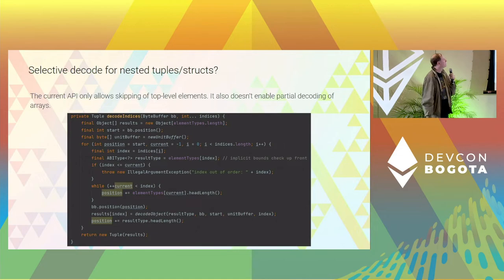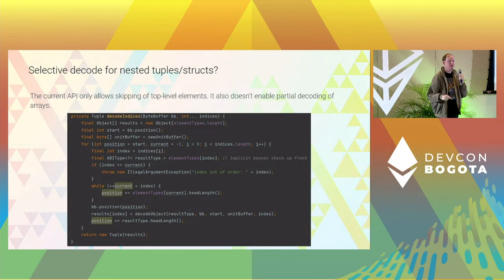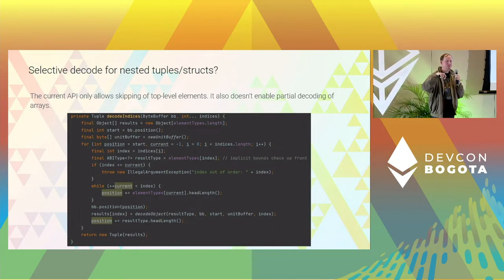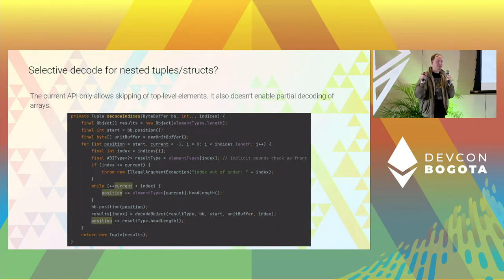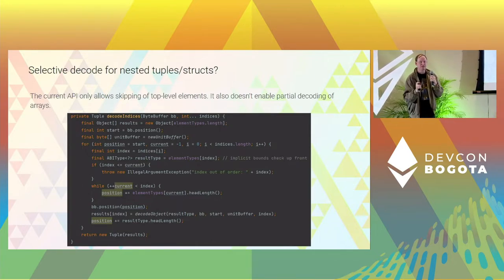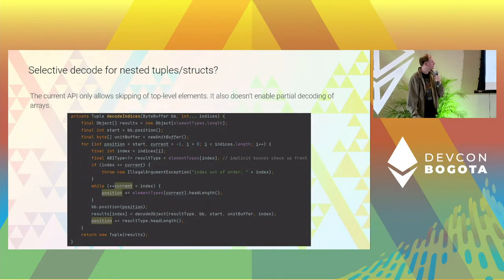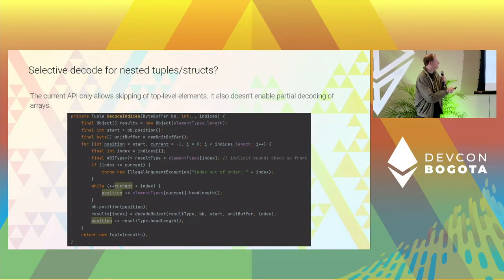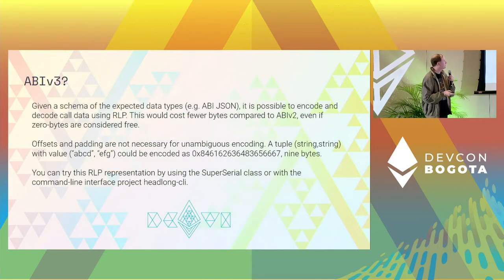Future work might involve doing more partial decodes, like querying nested tuples — going to a specific index, and if that's a tuple, going into an index within that and just picking out the thing you want to decode while ignoring everything else. But it requires jumping around the index.